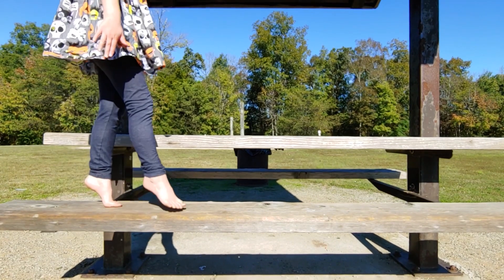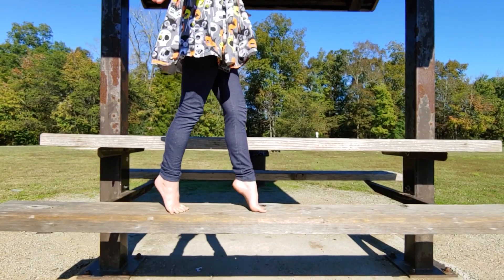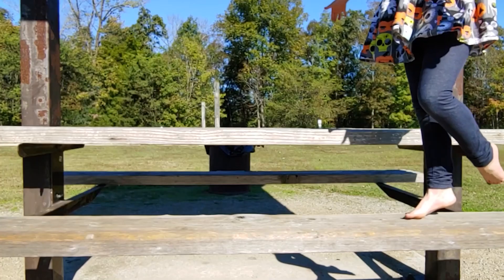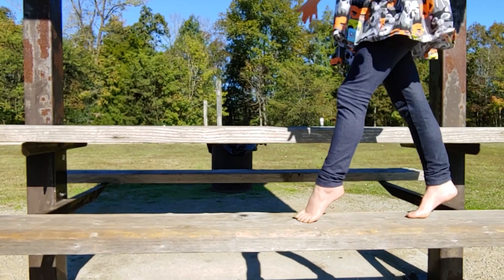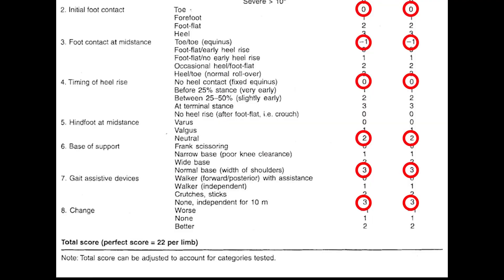Next is the base of support. Lindsay appears to have a normal base of support with her feet about shoulder width. So she gets three points on the right and left leg. The final gait parameter is gait assistive device — Lindsay does not require one to walk, so she gets three points on each leg. Lindsay's total is 10 points on the observational gait scale. This test could be used to measure change over time after she engages in treatment. She's had no treatment for her toe walking, but you could score the eighth parameter to track progress.